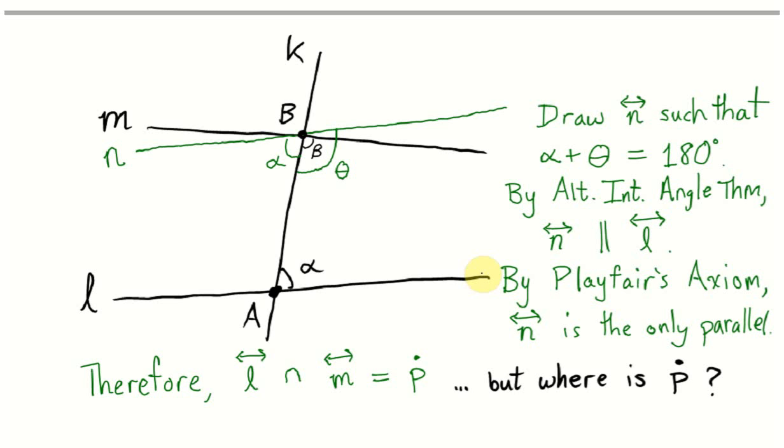Now remember, we were assuming Playfair's axiom to be true. Playfair's axiom says that there is only one line parallel to L through this point B. Since N is parallel, therefore M cannot be parallel. Since M is not parallel to L, that means M and L must intersect at some point. Now all there remains to prove Euclid's fifth axiom is to show that that point is on the same side as these two angles, alpha and beta. The point must be over here somewhere.